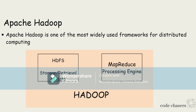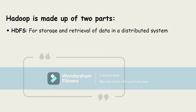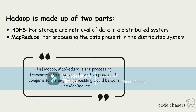If we want to store or retrieve data from the source, we use the HDFS part in Hadoop. The other part is MapReduce — it is basically a processing engine and the processing framework in Hadoop. So if you write a program to compute something, the processing is done using MapReduce and the storage and retrieval part is taken care of by HDFS.